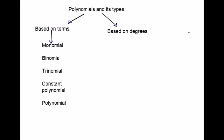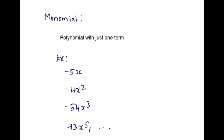Let us start with monomial. Monomial is a polynomial with only one term. I have given few examples under the topic monomial. These are the polynomials with just only one term.